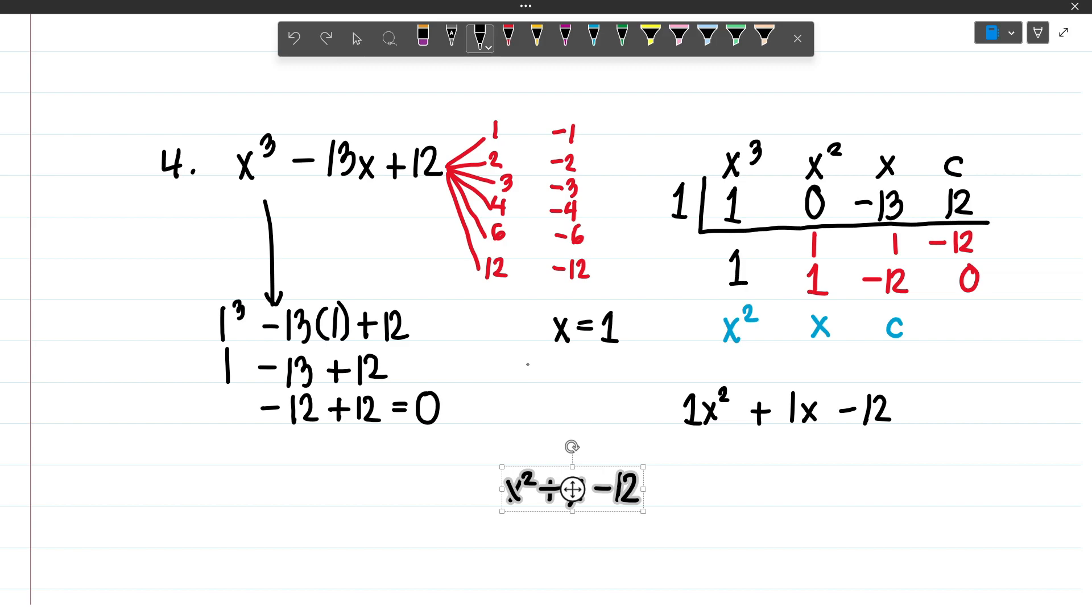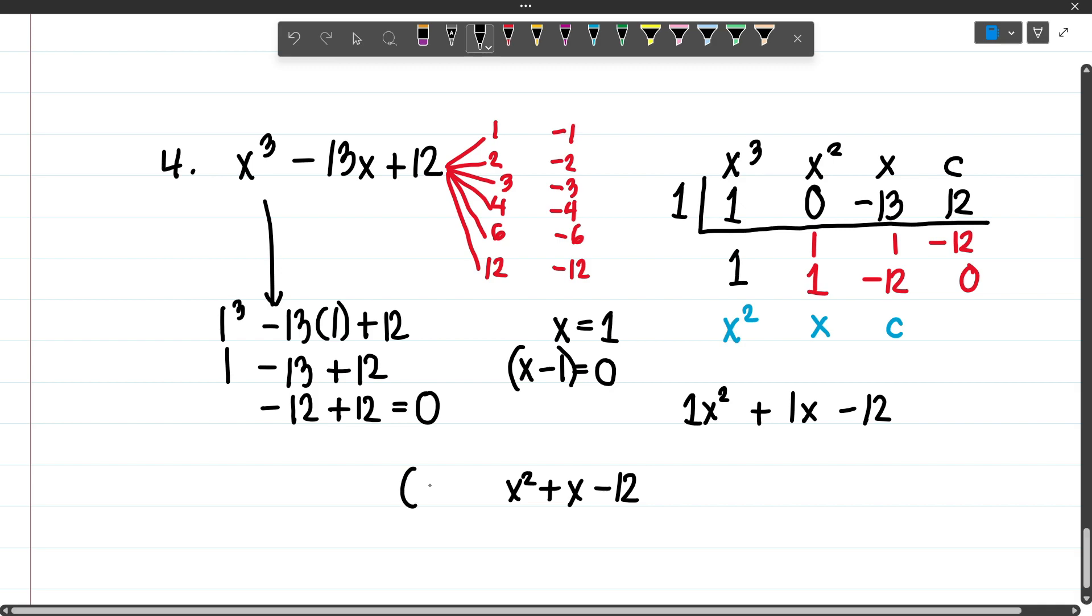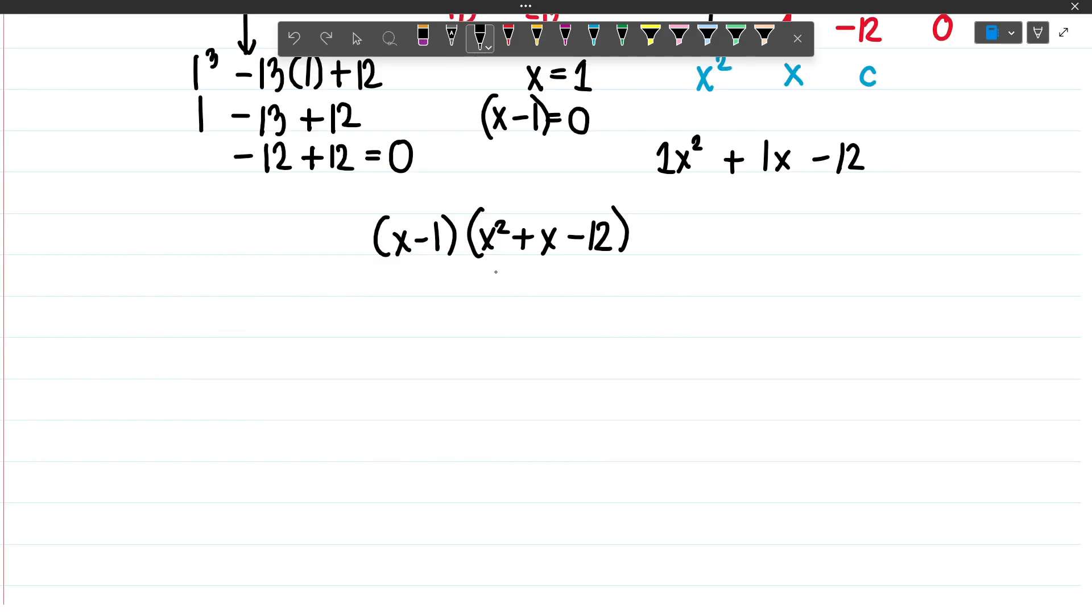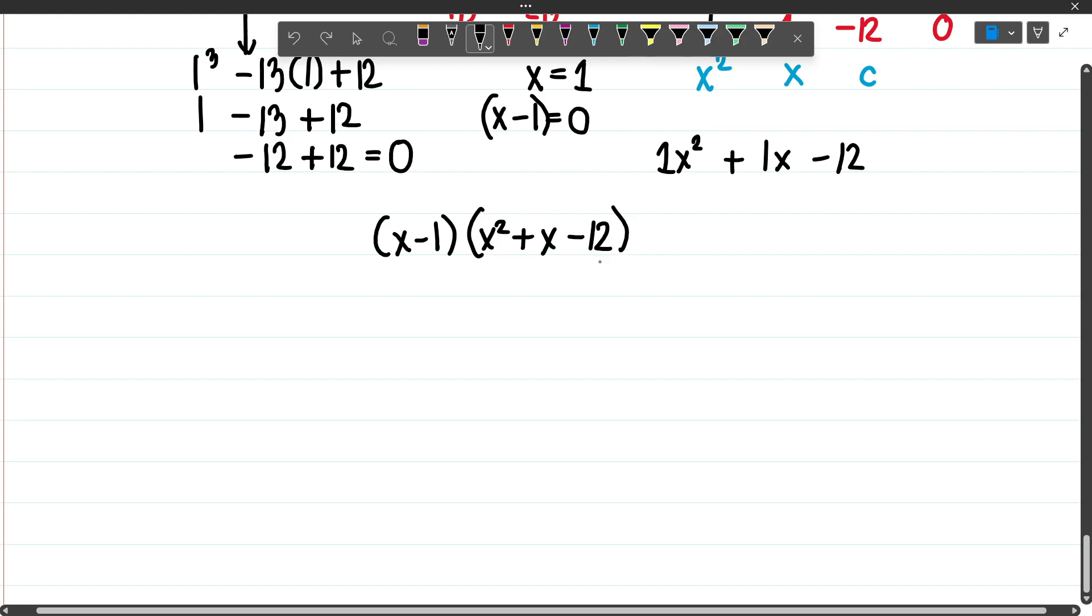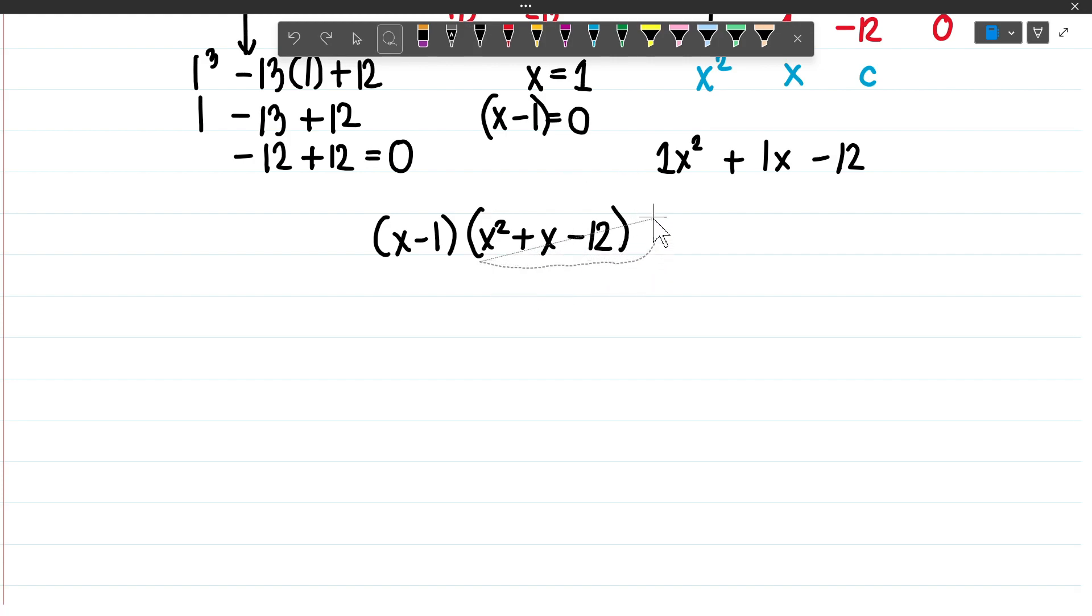We move 1 to the left side and it will become x minus 1 equals 0. So this is your factor. Your factors will be x minus 1 times this expression. However, just a reminder, it's important to factor out completely our equation. Let's try to simplify this equation.